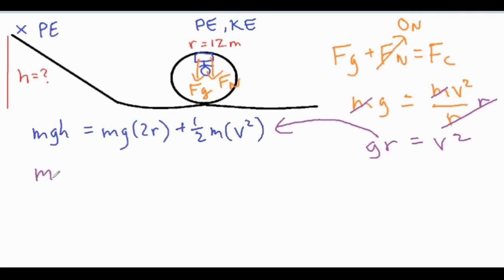That would mean we then have MGH equals MG(2R) plus one half MGR.